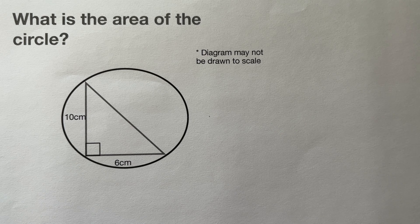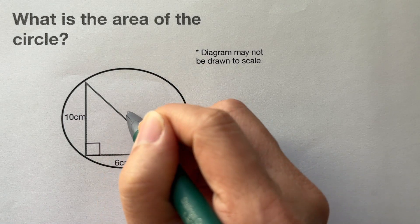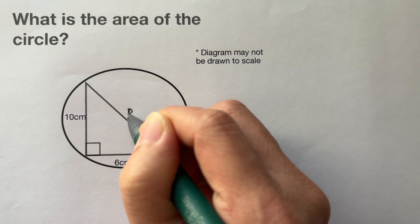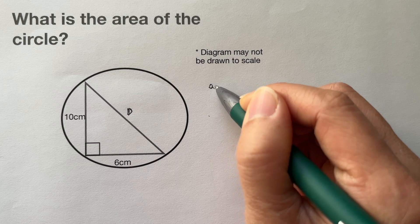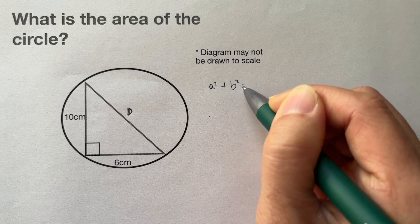a right triangle circumscribed inside a circle has its hypotenuse as the diameter. So now we can solve for the hypotenuse.